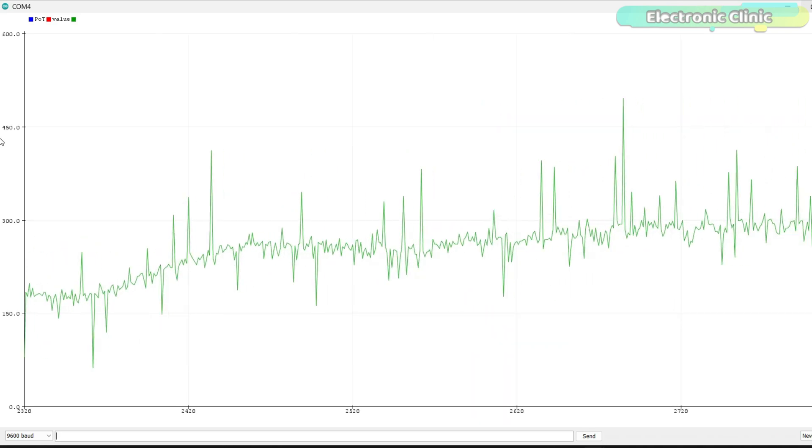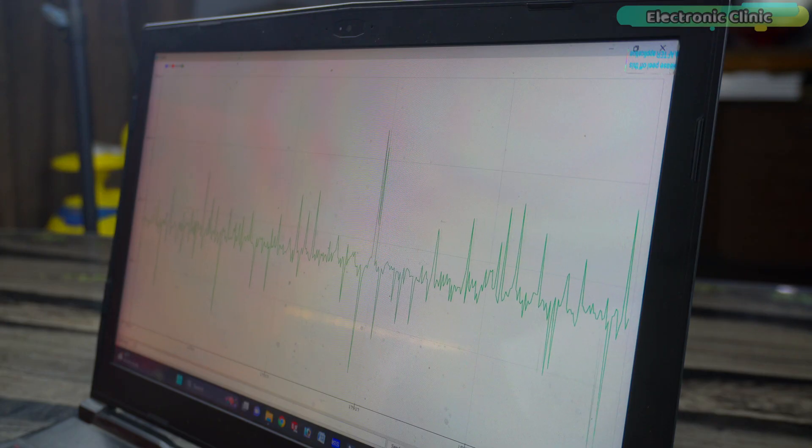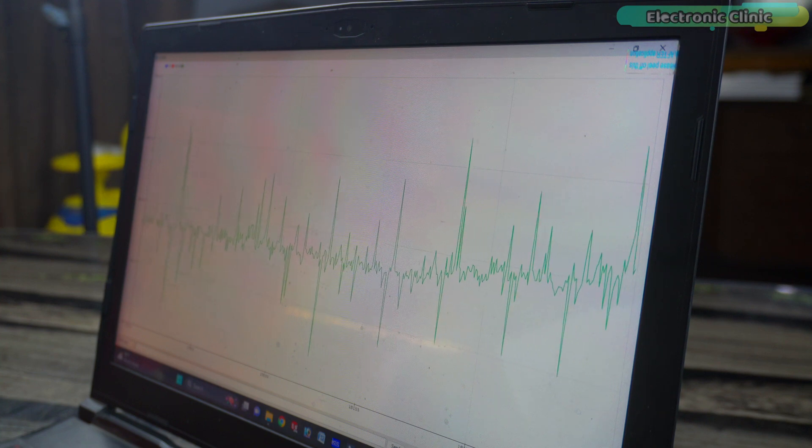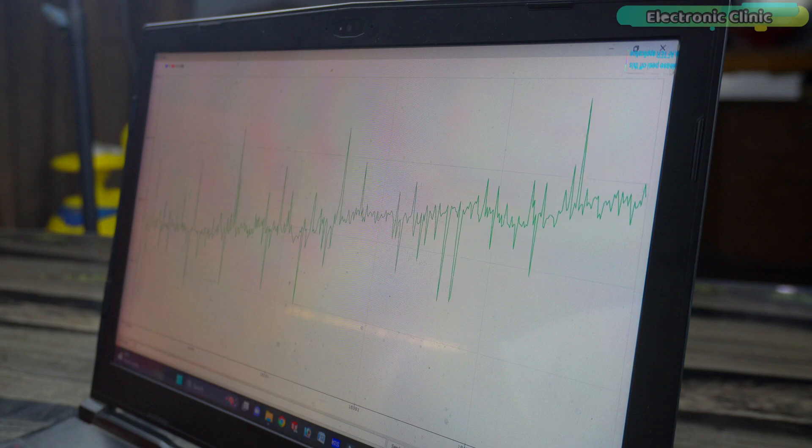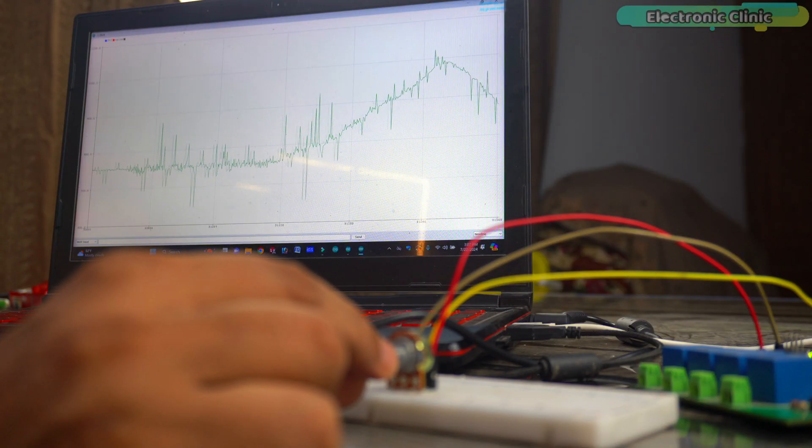We are going to explore several methods to smooth out these fluctuating sensor values. We will start with a basic program that reads the sensor value without any averaging or filtering techniques. This will help us understand the problem and see the raw data as it comes from the sensor.